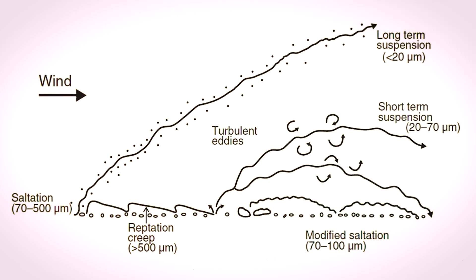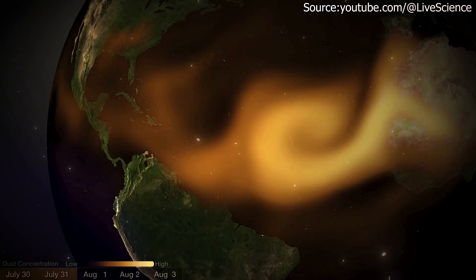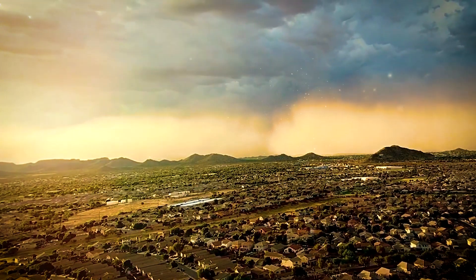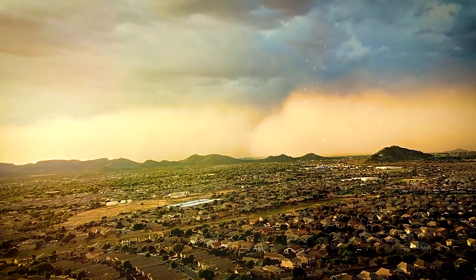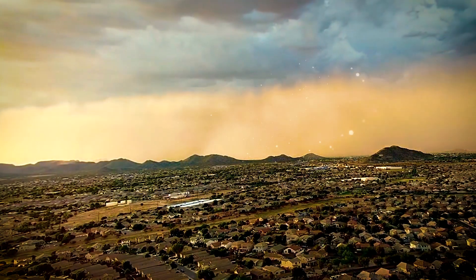As the wind keeps blowing, the storm begins to spread and grow. More and more particles join in, and the dust cloud can move across great distances. Sometimes, when new gusts or thunderstorm winds hit the area, they push the wall of dust even farther, making the sandstorm wider and stronger.